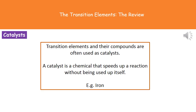We've already encountered some of these transition elements when looking at catalysts. Transition elements and their compounds are quite often used as a catalyst for a chemical reaction. A catalyst speeds up a reaction without being used up itself. The most common example we've referred to is the Haber process, where the catalyst is iron — which, if you look at your periodic table, is one of those transition elements.